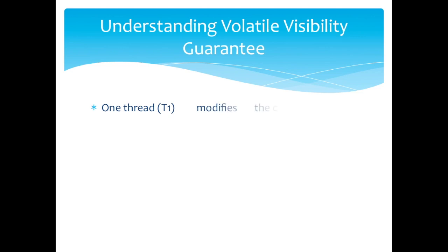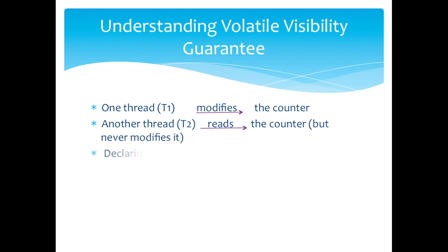Let's see what happens in this case for the same scenario. So when one thread t1 modifies the counter, and another thread t2 reads the counter but never modifies it, declaring the counter variable volatile is enough to guarantee visibility for the second thread for writes to the counter variable.